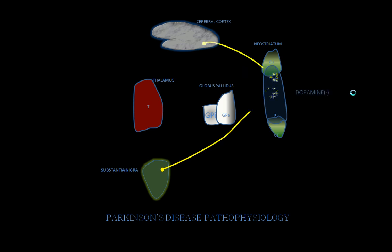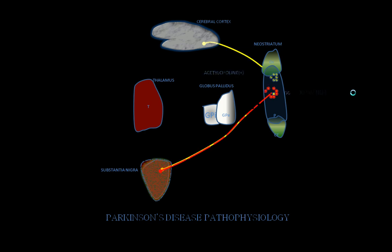But in Parkinson's disease, there is a degeneration of the substantia nigra neurons which release dopamine into the neostriatum, so there will be reduced or no production of dopamine, which causes Parkinson's disease.